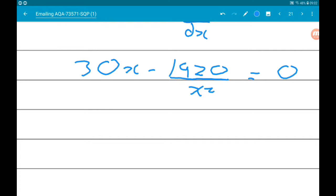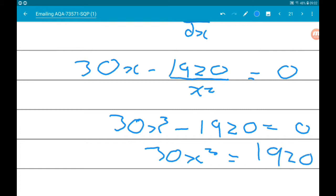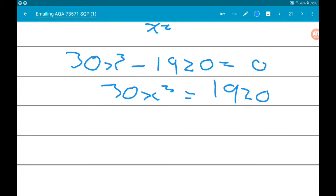This is now going to allow us to find the value of x. Let's multiply through by x². Then we get 30x³ - 1920 = 0. 30x³ = 1920. Divide through by 30: x³ = 64. And then if we cube root that, very nicely we get a whole number: x = 4.